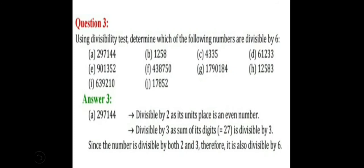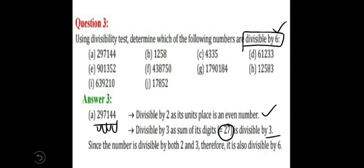Next is question 3. We have to check whether each number is divisible by 6 or not. The rule: if a number is divisible by both 2 and 3, then it is divisible by 6. The first number is even, so divisible by 2. Adding the digits: 2 plus 9 is 11, plus 7 is 18, plus 1 is 19, plus 4 is 23, plus 4 is 27. Since 27 is divisible by 3, the number is divisible by both 2 and 3, so it is divisible by 6.